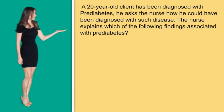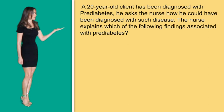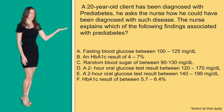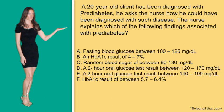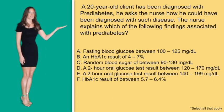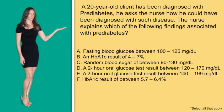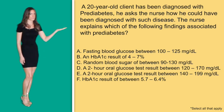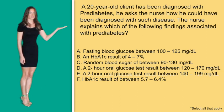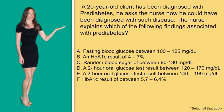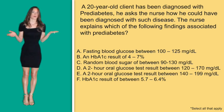A 20-year-old client has been diagnosed with pre-diabetes. He asked the nurse how he could have been diagnosed with such a disease. The nurse explains which of the following findings are associated with pre-diabetes — select all that apply. A: a fasting glucose between 100 to 125. B: a hemoglobin A1C result of four to seven percent. C: a random blood sugar between 90 to 130. D: a two-hour oral glucose test between 120 and 170. E: a two-hour oral glucose test between 140 and 199. F: a hemoglobin A1C result between 5.7 and 6.4.